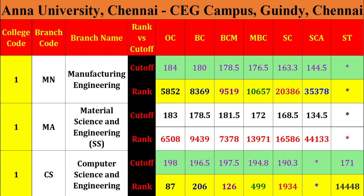Computer Science and Engineering cut-off: OC 198, rank 87. BC student 196.5, rank 206. BCMR 197.5, rank 126. MBC 194.75, rank 499. SC student 190.25.